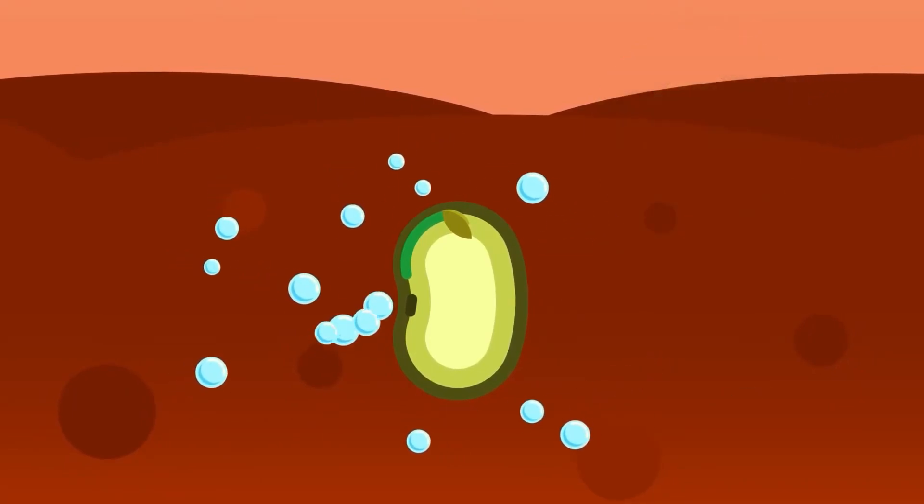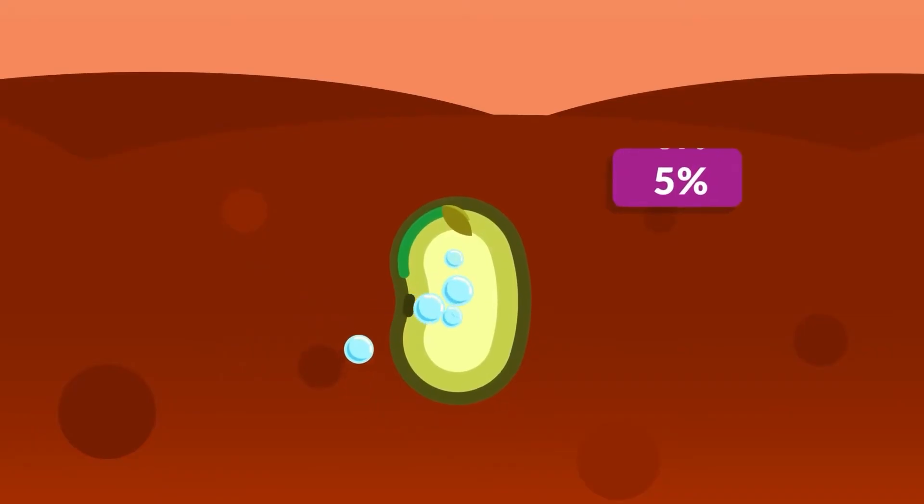First, water is imbibed into the seed. The 5-10% moisture level inside the seed then increases cellular respiration.